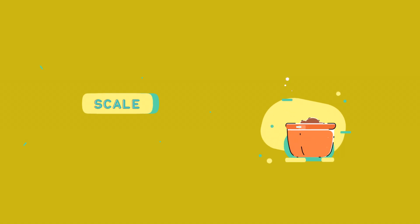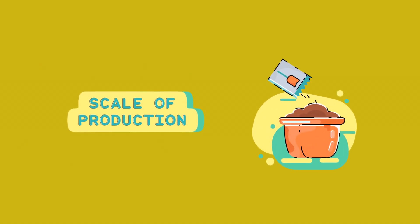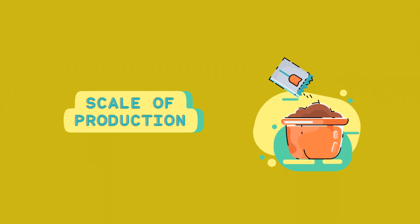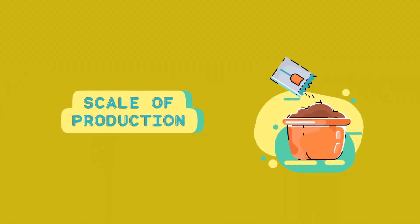1. Scale of Production. Agriculture typically involves large-scale production while horticulture often focuses on smaller-scale operations.